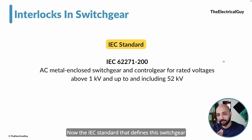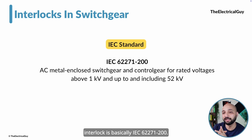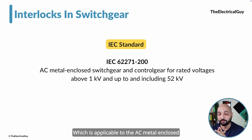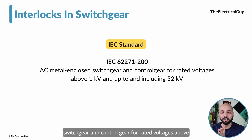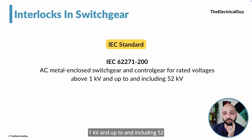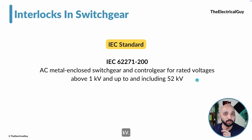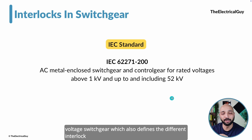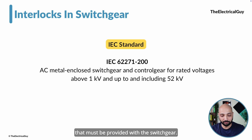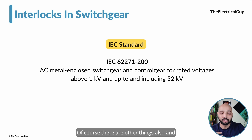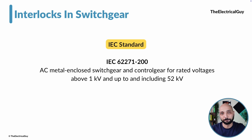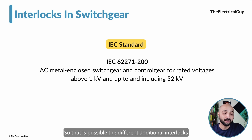The IEC standard that defines switchgear interlocks is IEC 62271-200, which is applicable to AC metal-enclosed switchgear and control gear for rated voltages above 1 kV and up to and including 52 kV. This is the parent standard for medium voltage switchgear, which also defines the different interlocks that must be provided. There can be additional interlocks beyond these two examples depending on the customer's requirements.